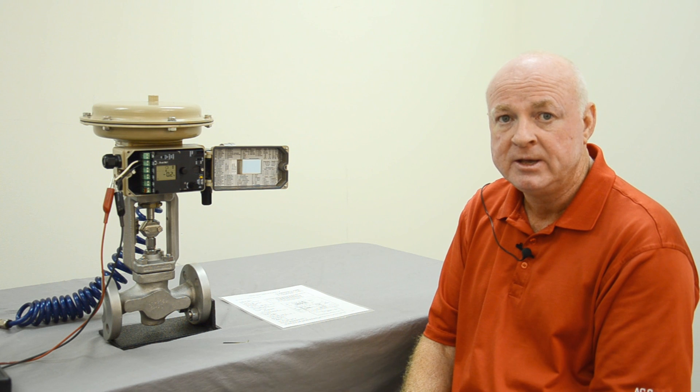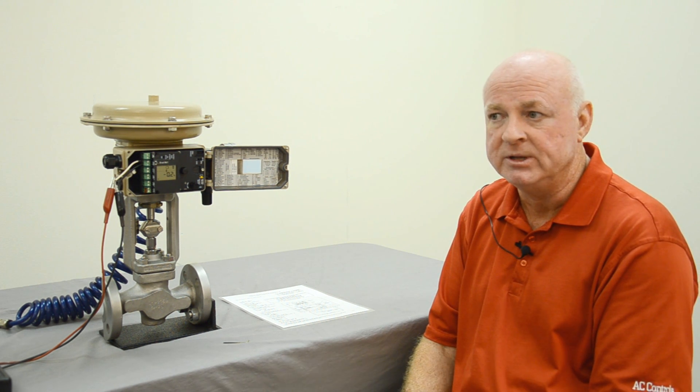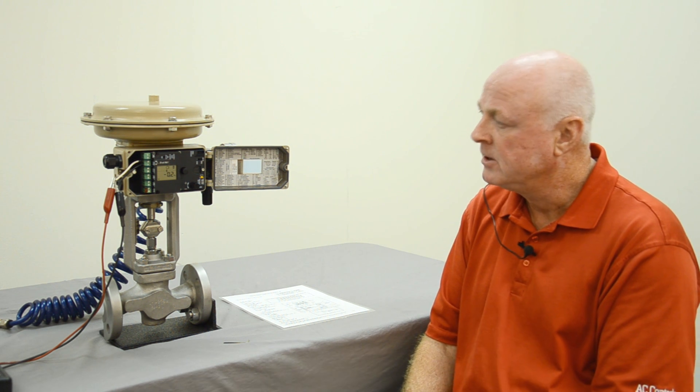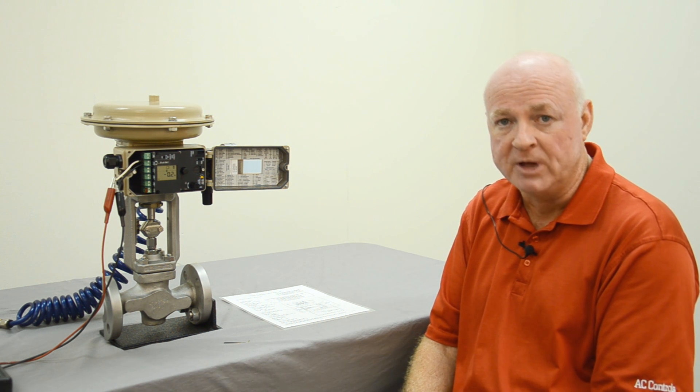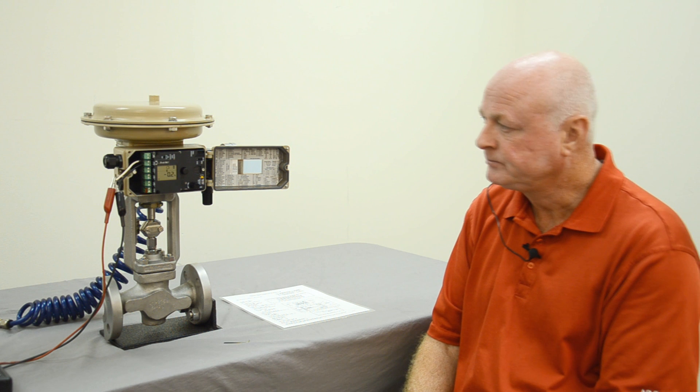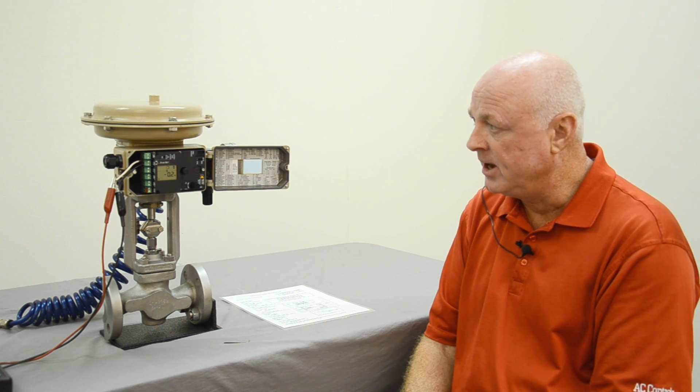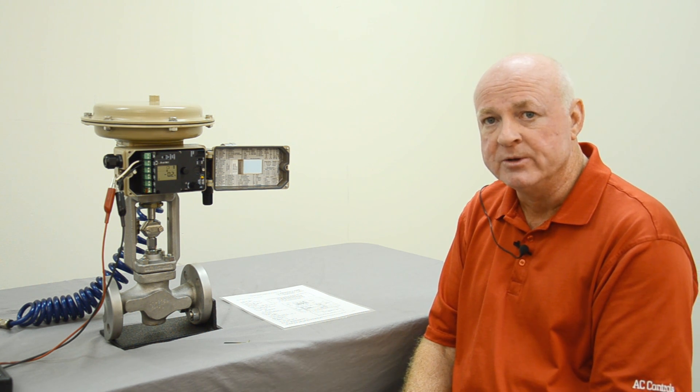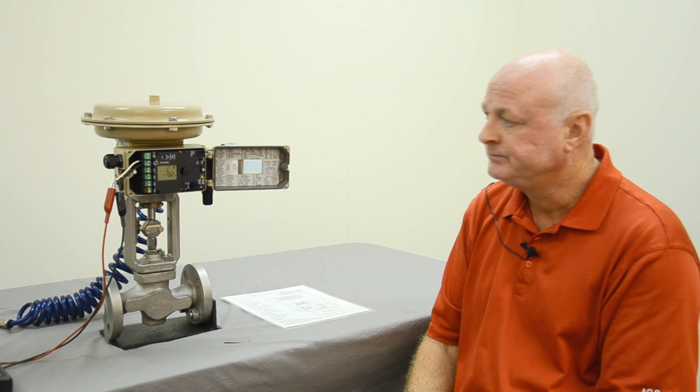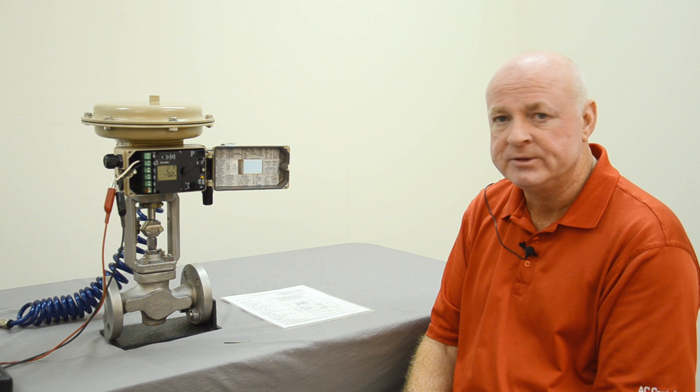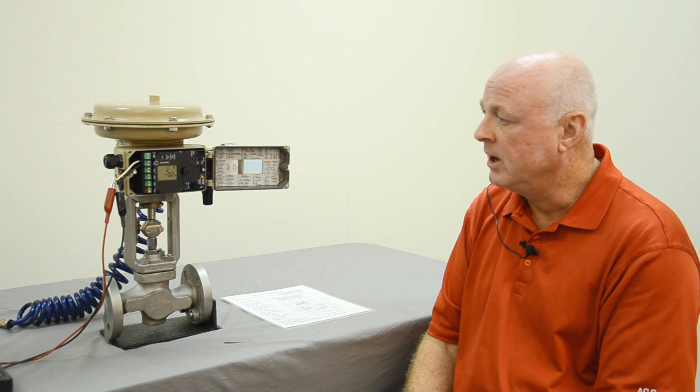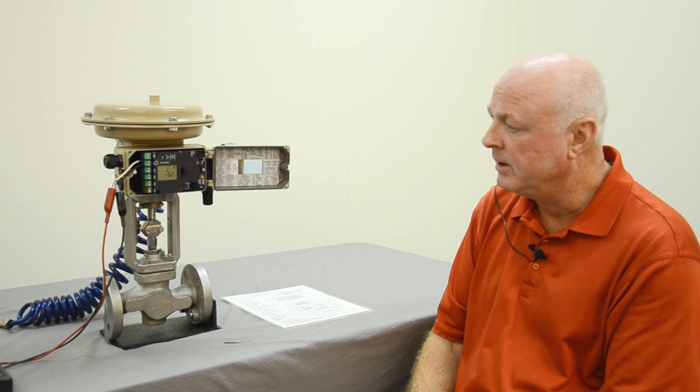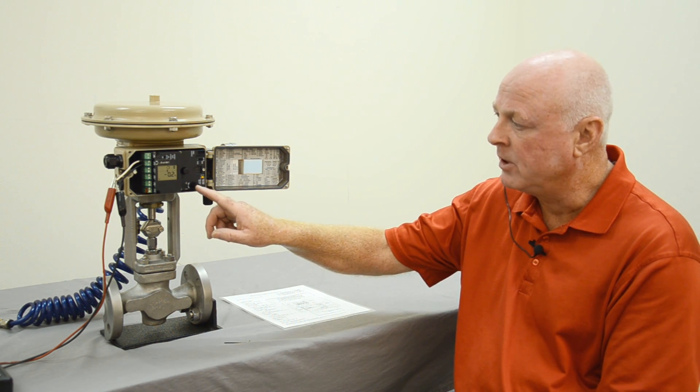So for example, we have fifteen PSI spring range. If we have forty pounds of air, then that's above the range and lower than the maximum air supply that the positioner can handle. So once you've got your air supply hooked up and your milliamp signal, the positioner will go through a self-diagnostics. Once it goes through its self-diagnostics, then you're ready for configuration.